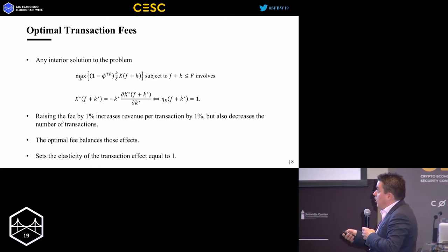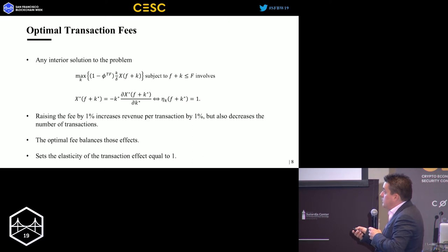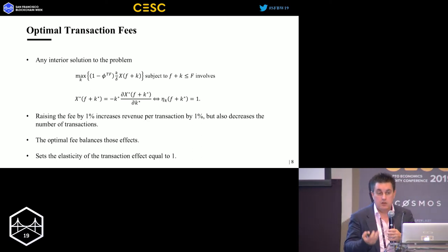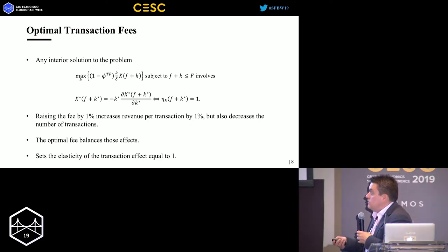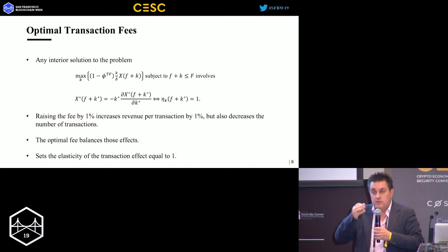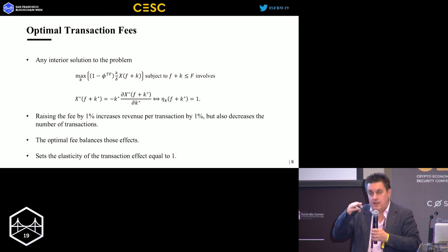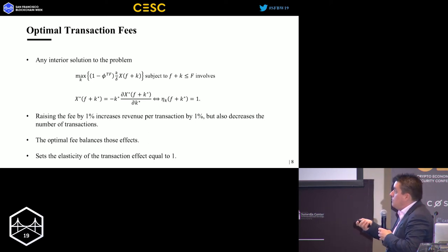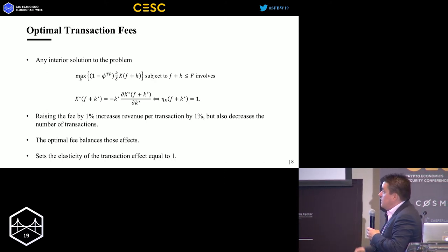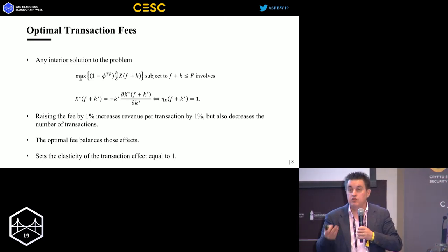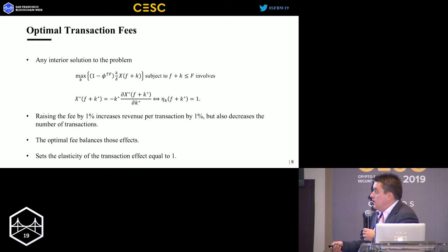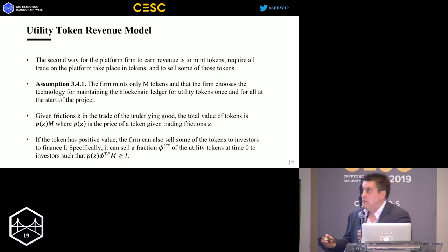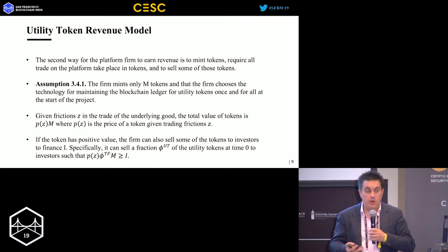Optimizing that leads to a trade-off that depends on the standard economic concept of elasticity - a percentage change in one thing for a percentage change in another. The trade-off is: raising the fee by one percent increases revenue per transaction by one percent, but also decreases the number of transactions because it reduces demand. The optimal fee balances those effects, setting the elasticity of this transaction effect equal to one. That's the fee-for-service model.